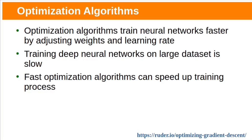Today we are going to discuss optimization algorithms for deep learning. Optimization algorithms train neural networks faster by adjusting weights and learning rate. In deep learning we would be dealing with bigger datasets, and training on larger datasets is slow. We need fast optimization algorithms which can speed up the training process.